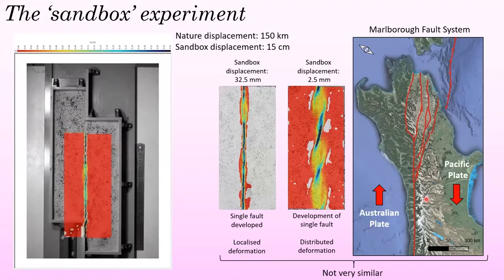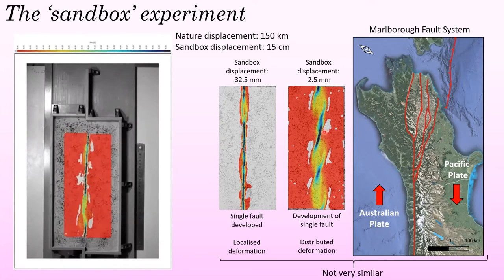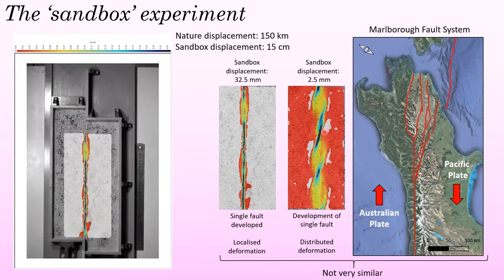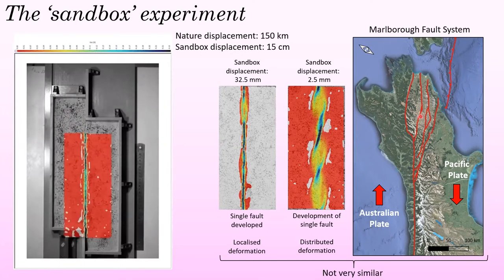However, if we look at the sandbox as the displacement starts — before this single fault develops — we can see that the zone of deformation is much wider. In this wider zone of deformation, we have faults developing oriented around 15 degrees relative to the direction of plate motion, which is quite a similar orientation to the faults of the Marlborough fault system.